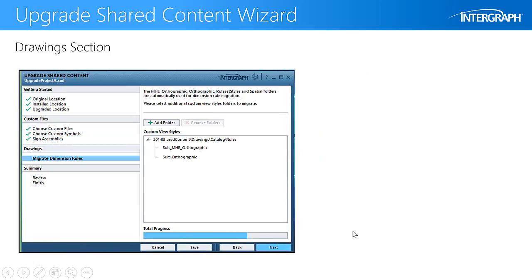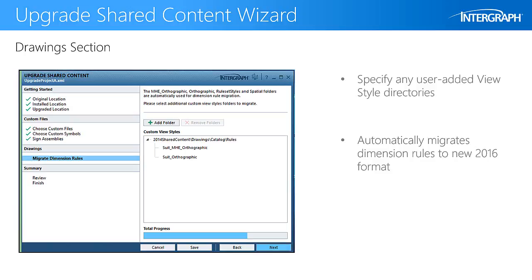The Drawing section contains the Migrate Dimension Rules step. In version 2016, the Dimension Rule format was changed slightly to support an easier workflow with the new Dimension Rule Manager. Here, you will specify any custom ViewStyle folders so that their associated dimension rules can be migrated.